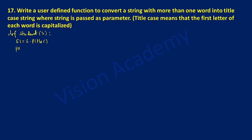Next I'm going to write the print statement: print the input string in the title case is, then put a comma and write s1. Alternatively, you can directly write s.title() in place of s1, calling that particular function to make the first letter of each word a capital letter.